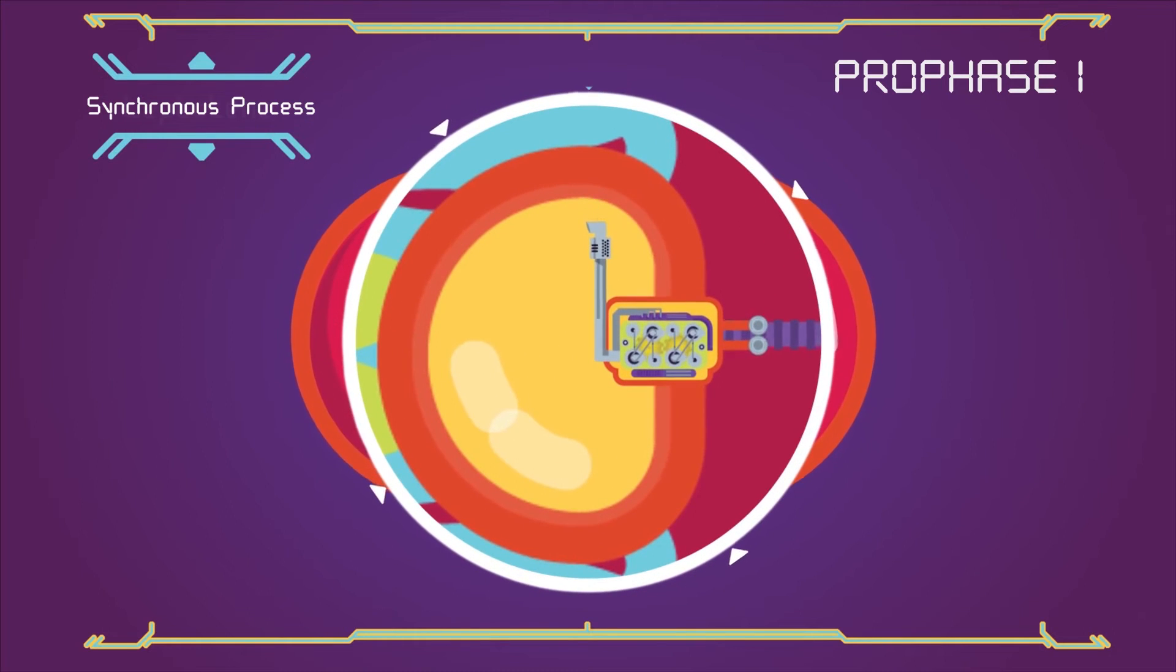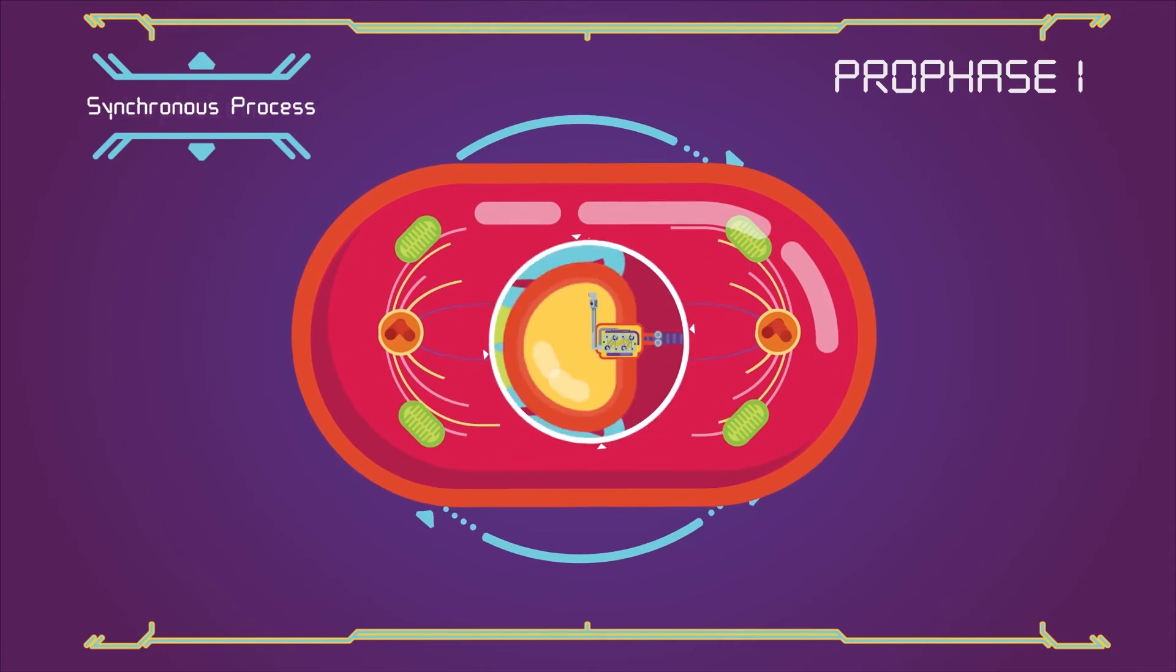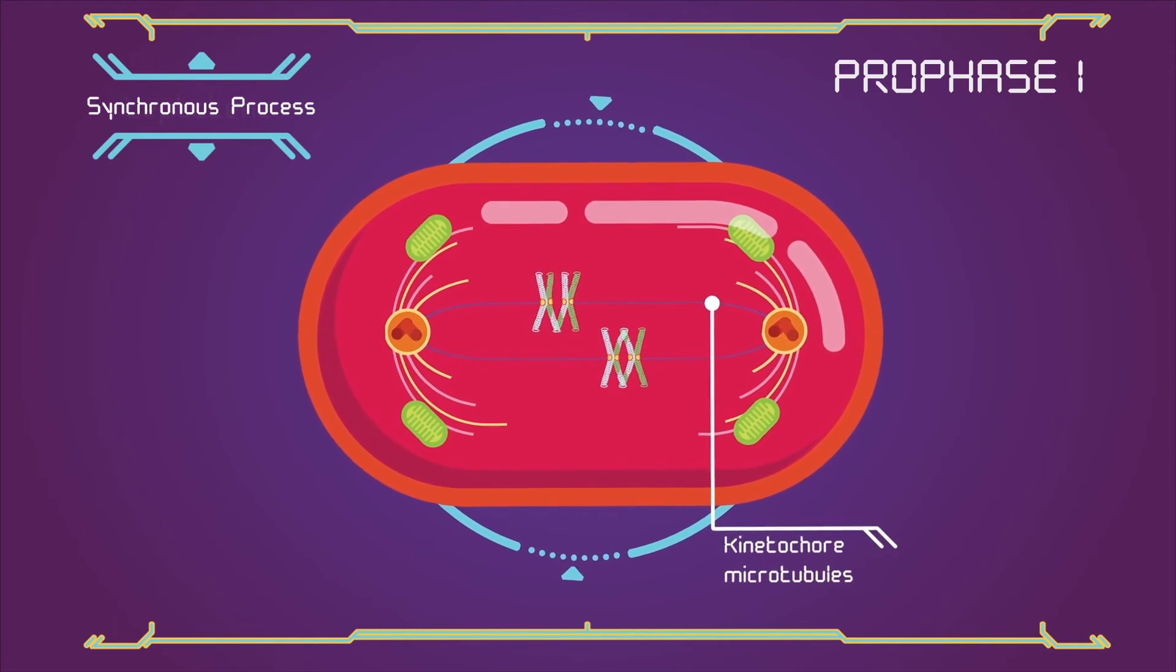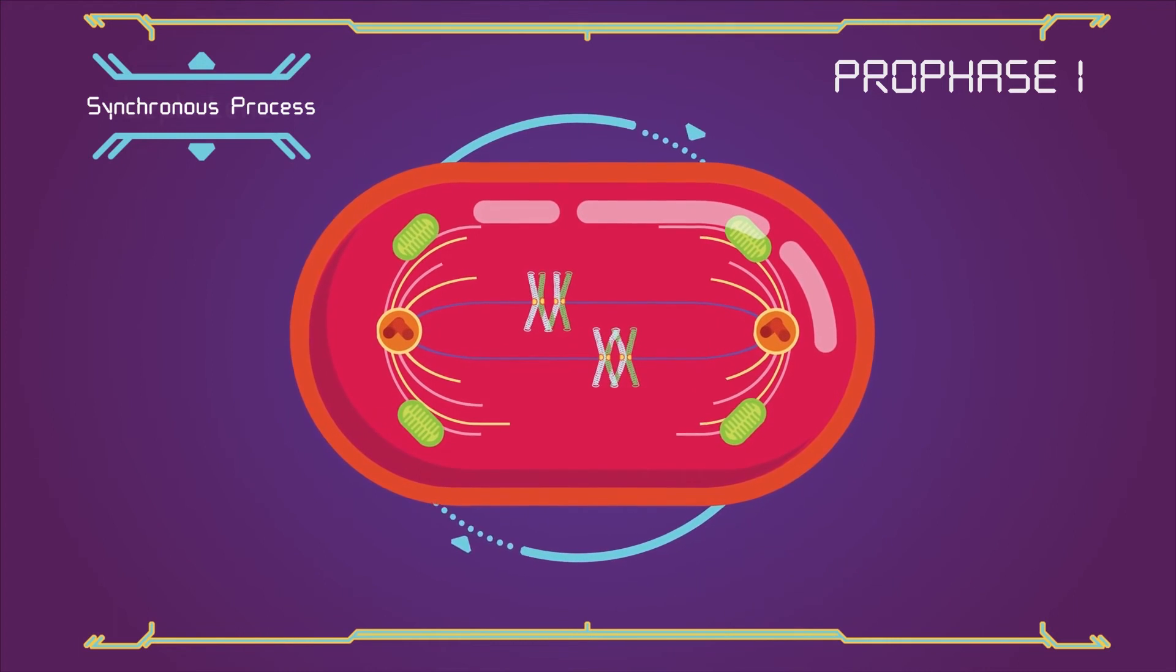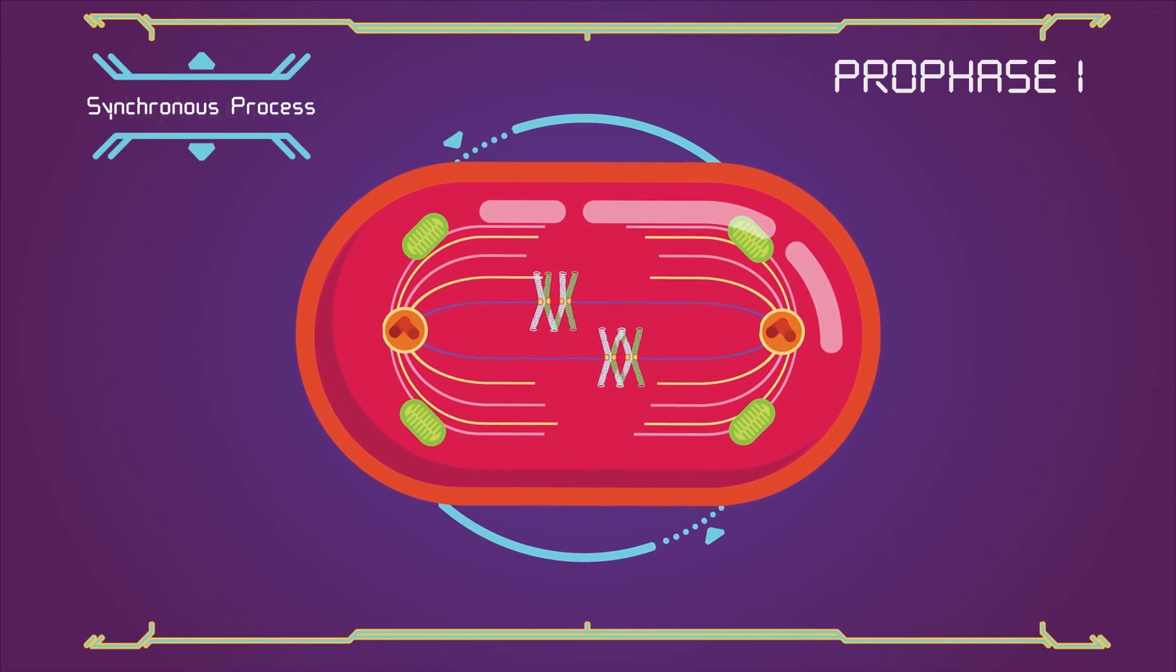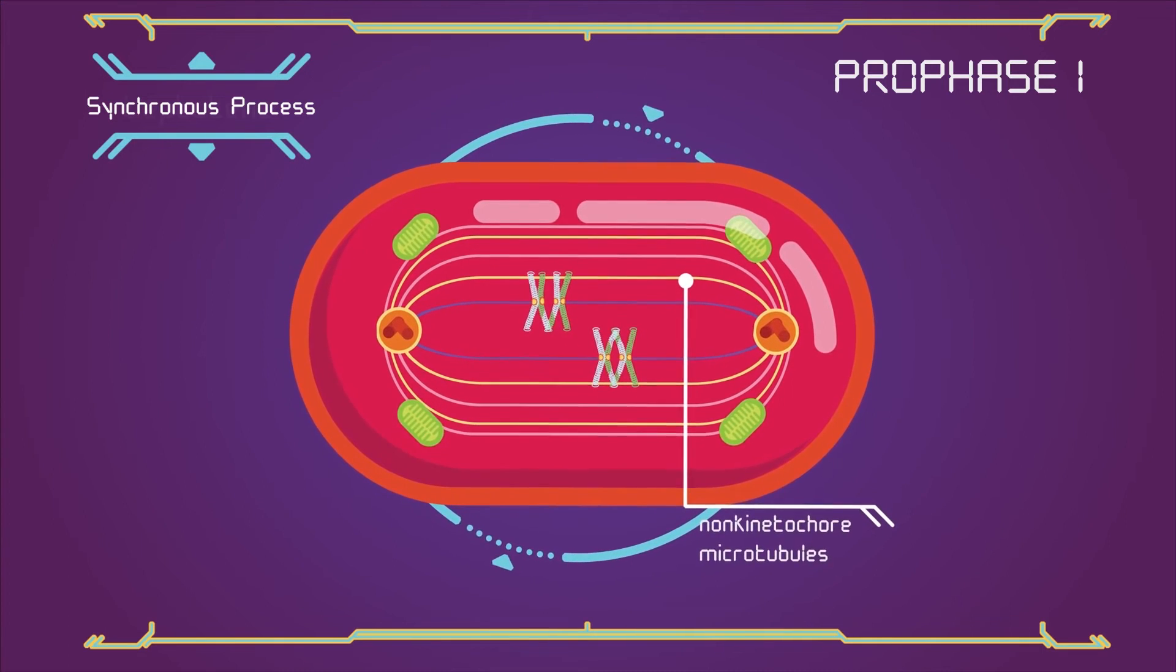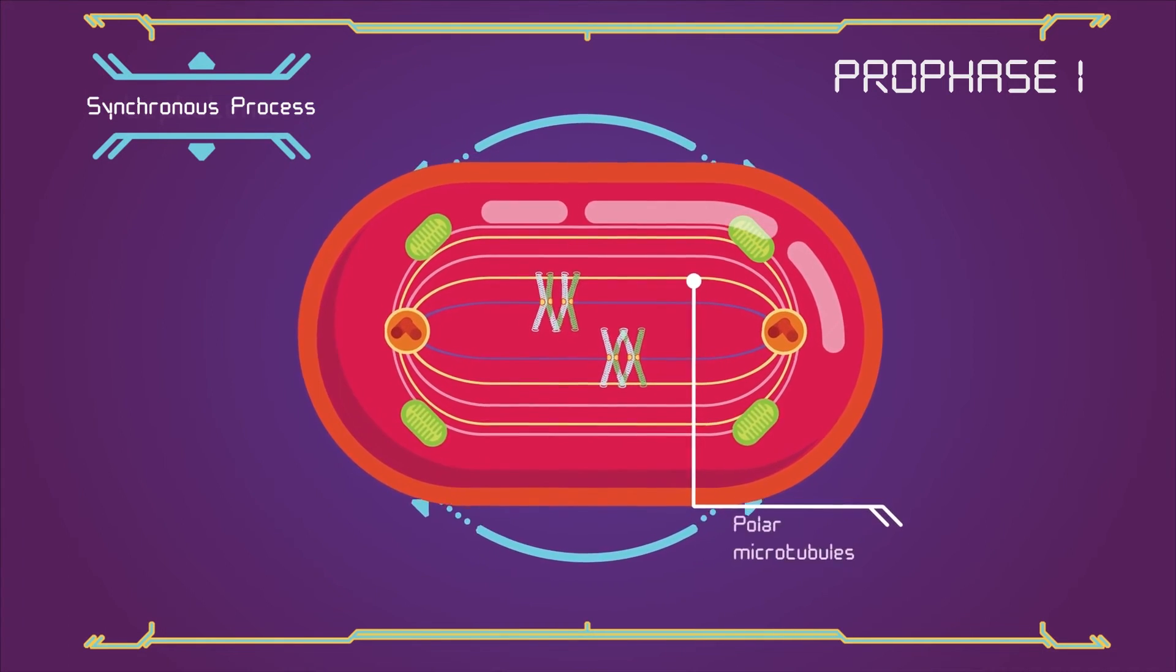Microtubules that attach to the kinetochores are known as kinetochore microtubules. Other microtubules will interact with microtubules from the opposite centrosome; these are called non-kinetochore microtubules or polar microtubules.